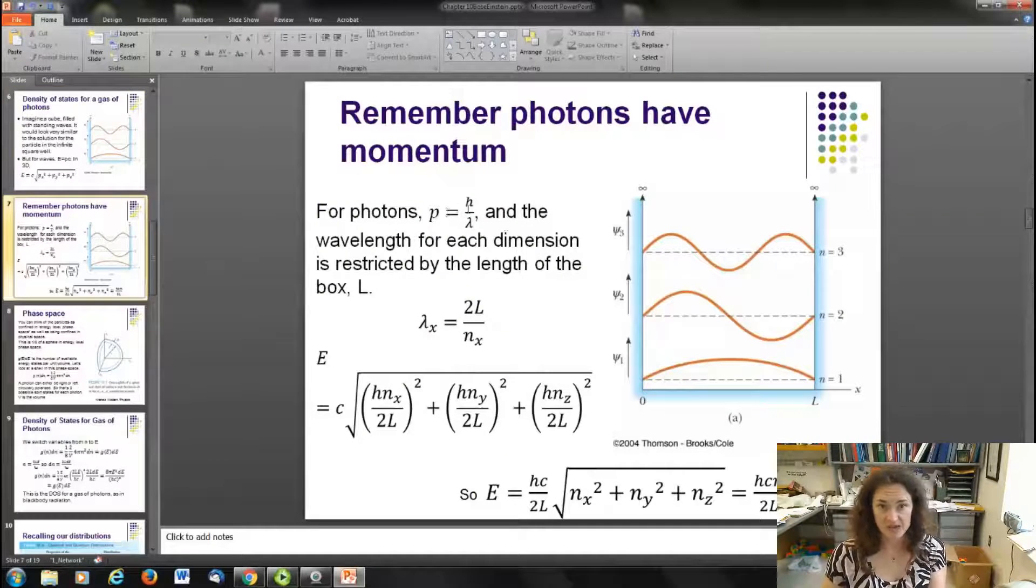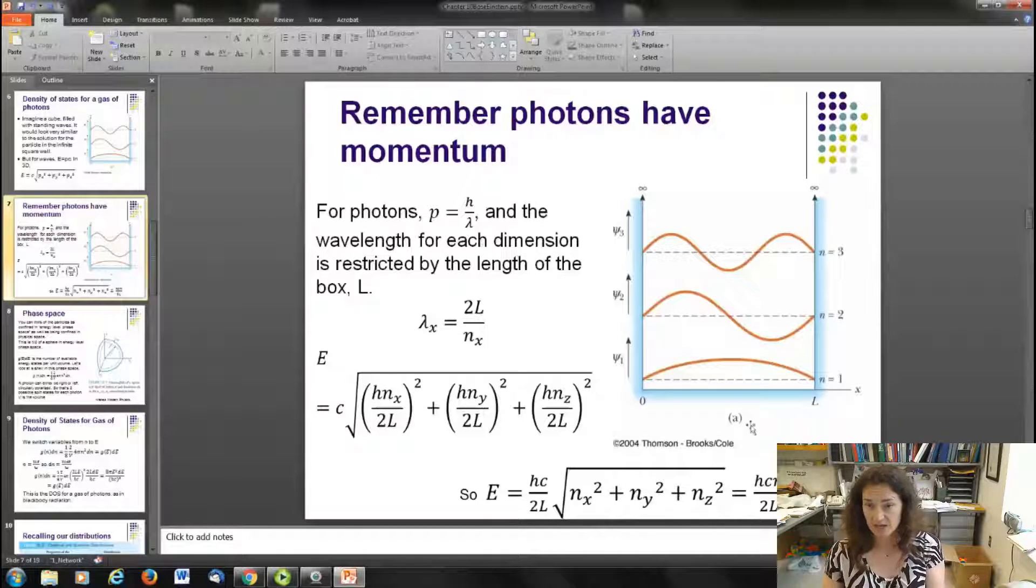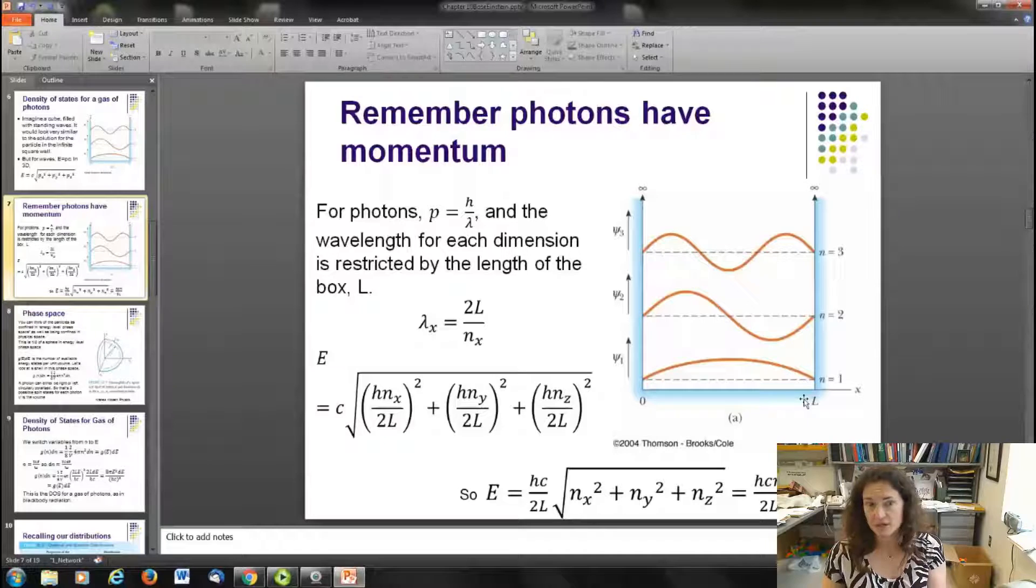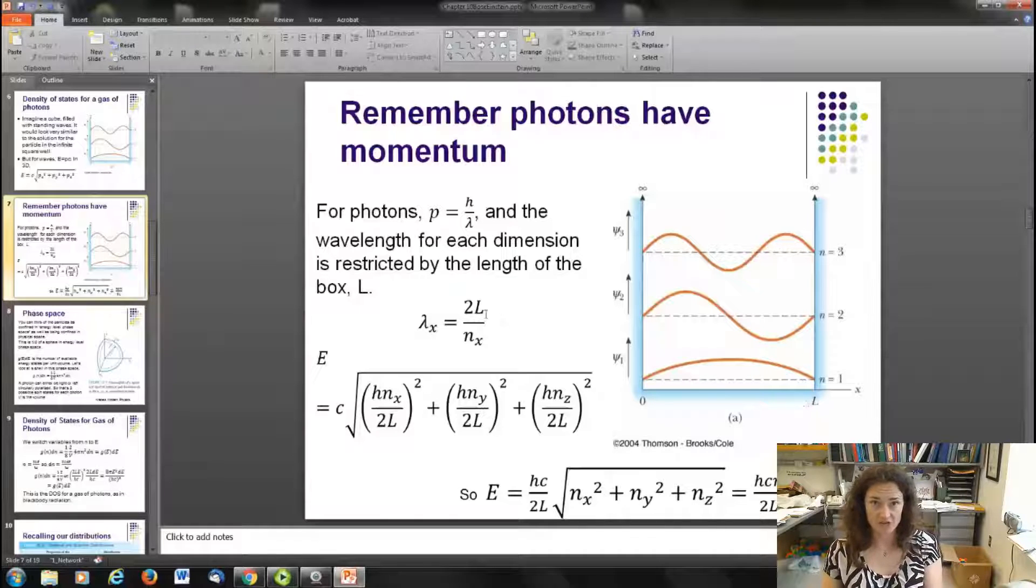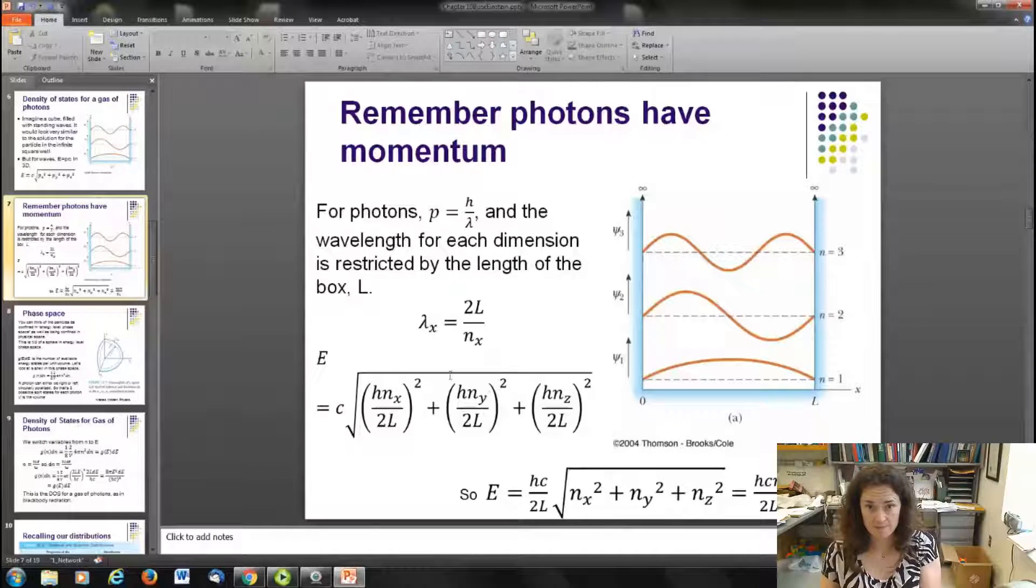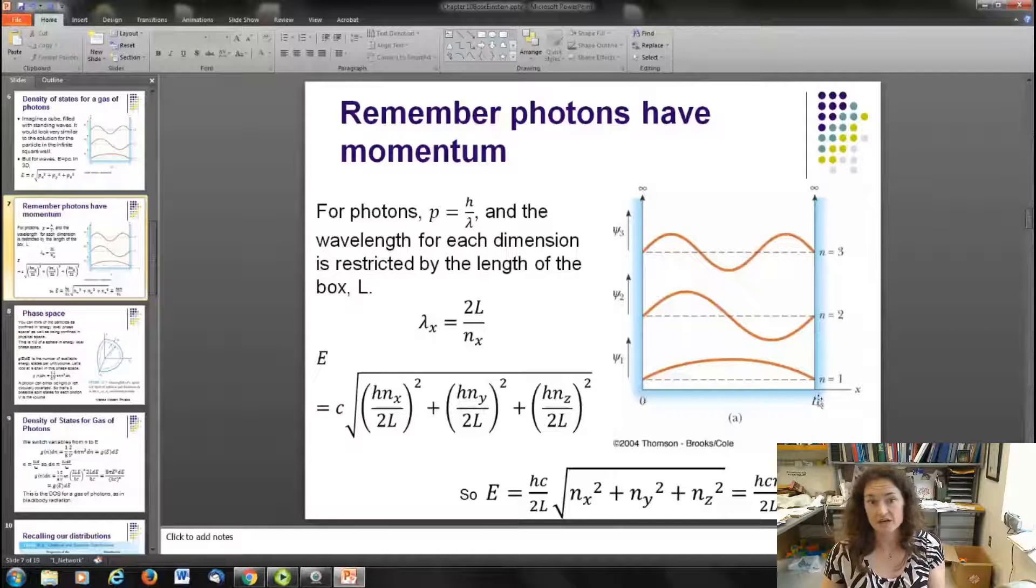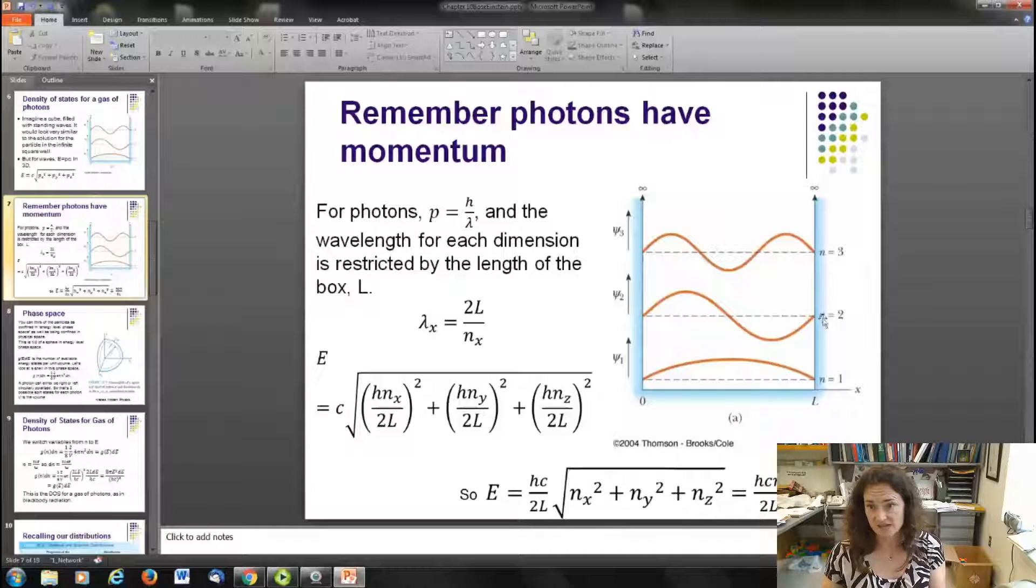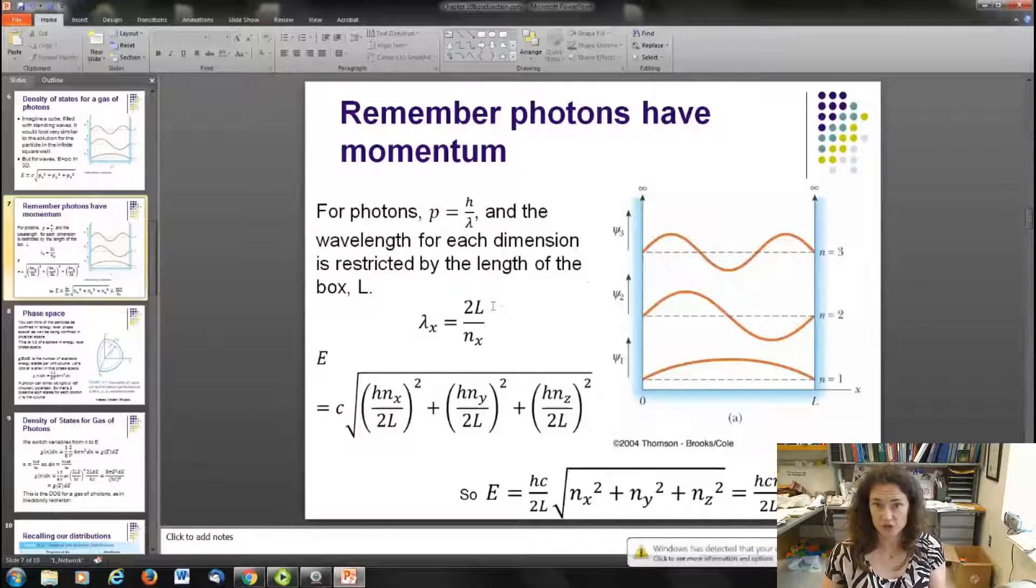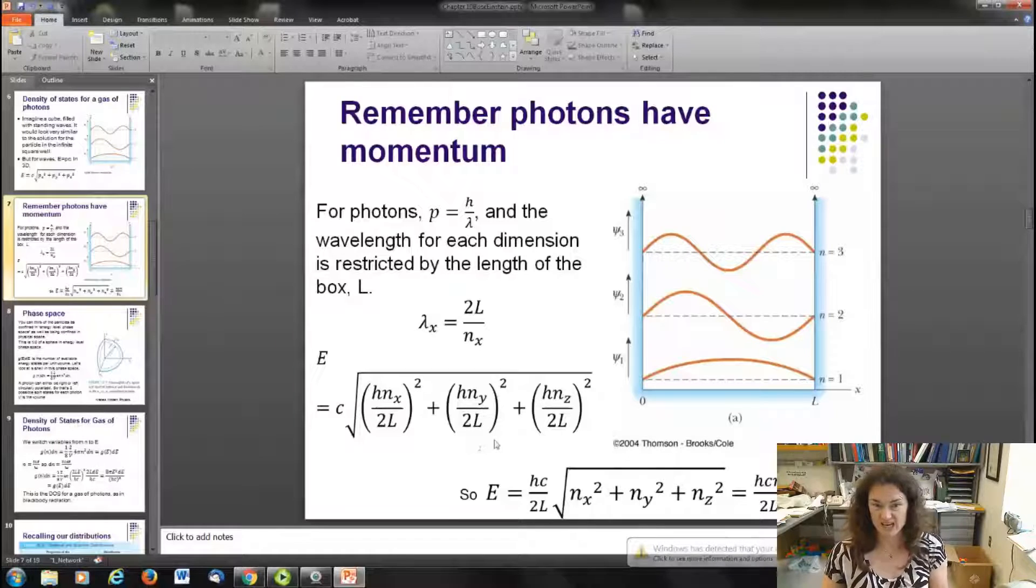So, remembering that p = h/λ, and the wavelength for each dimension is restricted by the length of the box, you've got one half wavelength confined in this box of side L. So that means that the wavelengths are actually going to be equal to 2L/n for each direction x, y, and z. In other words, if it's in the ground state, n = 1, then the total wavelength here is 2L. And then for the first excited state, you've got one full wavelength confined in the box, and its wavelength would be L/2. I hope you understand that and see it. But if you don't, go ahead and pause the video and take a second to really take that in.